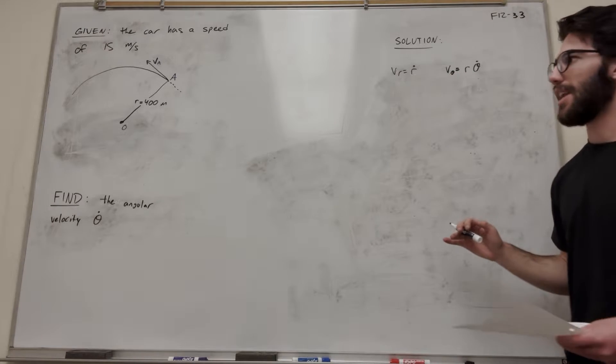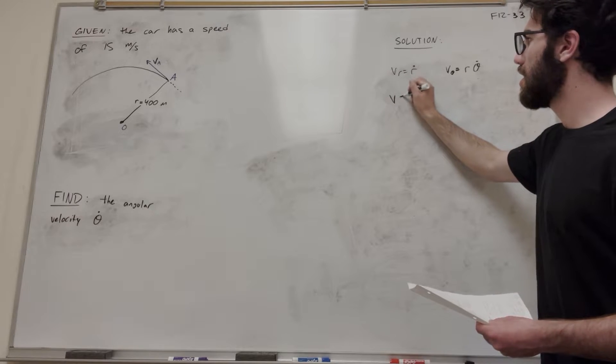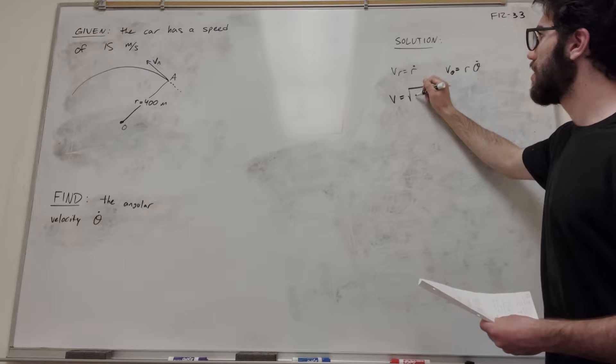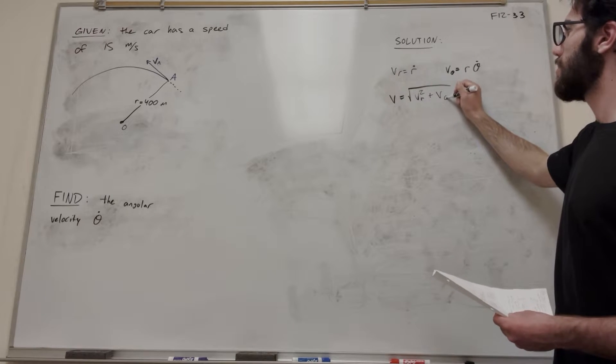So let's go ahead and look that up. We have these two equations, and the magnitude of the velocity is equal to the transverse component squared plus the radial component squared.